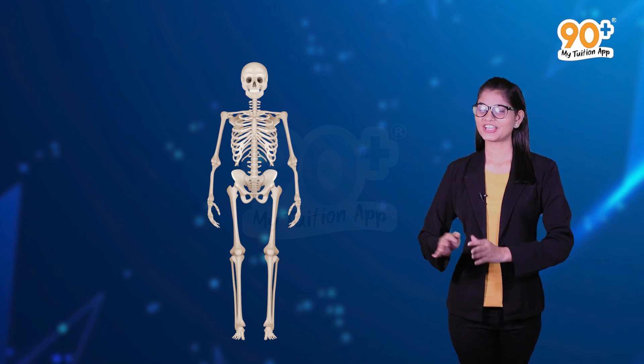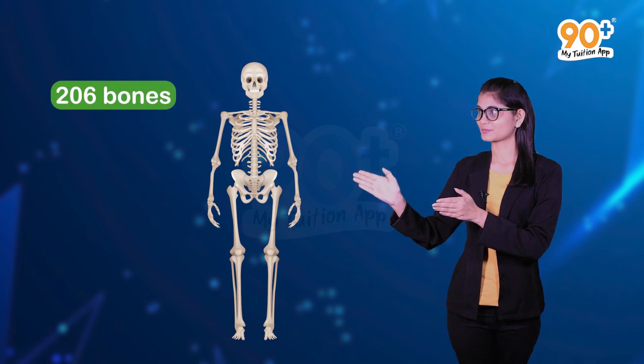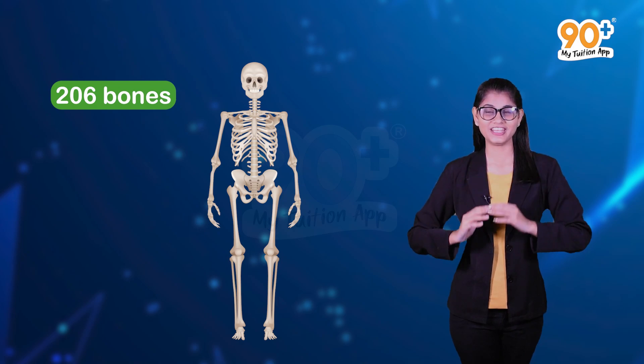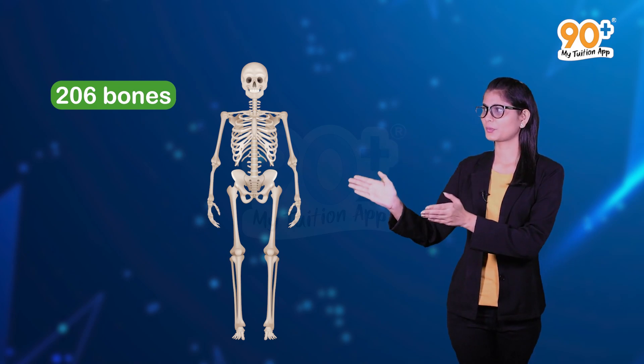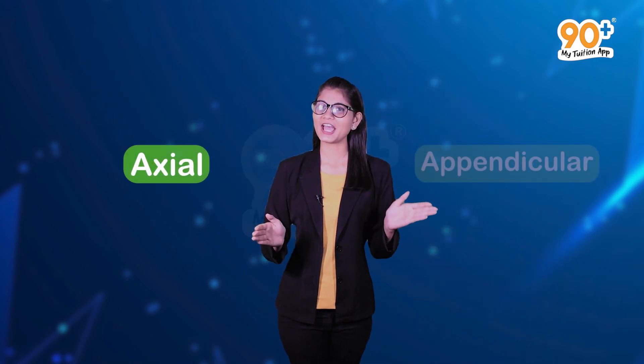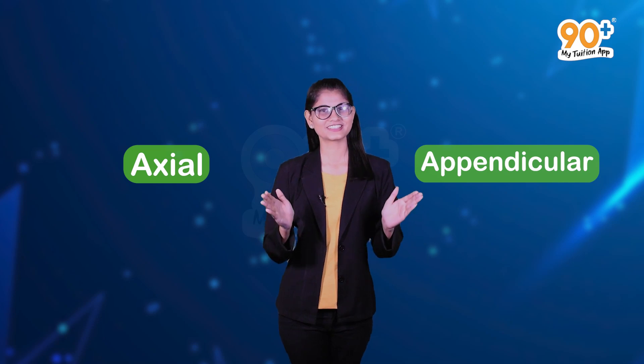Now we know the importance of this system. Let us look at the different parts. In human beings, this system is made up of 206 bones and a few cartilages. It is grouped into two principal divisions: the axial and appendicular skeleton.